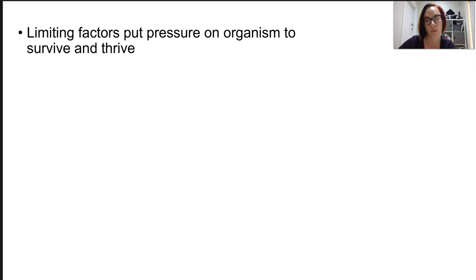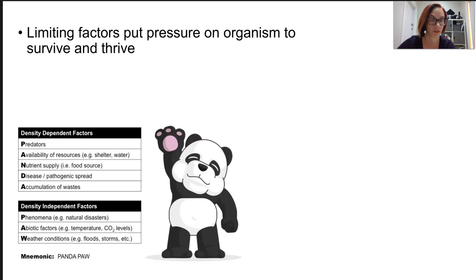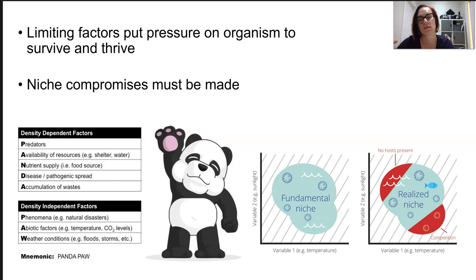An organism's niche, competitors, predators, disease, whatever in an ecosystem all put pressure on it to survive. And these limitations mean that an organism will need to make compromises to go from living in its ideal world to its real world, so its realized niche.